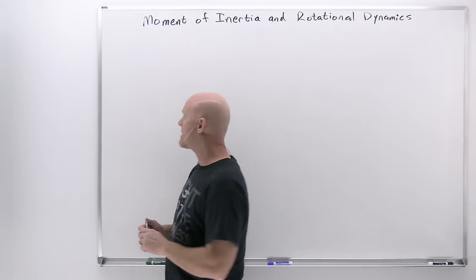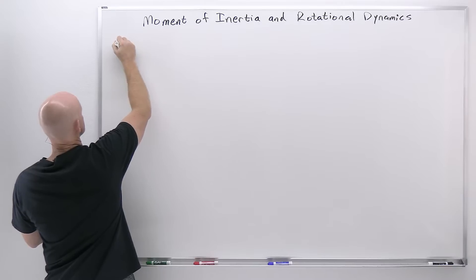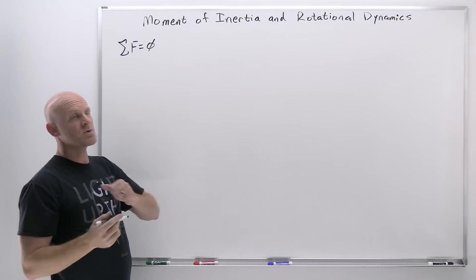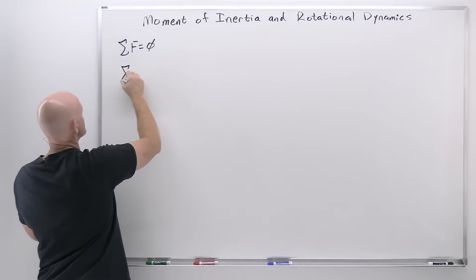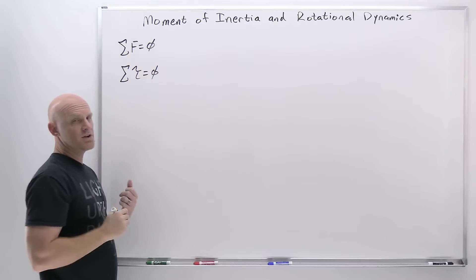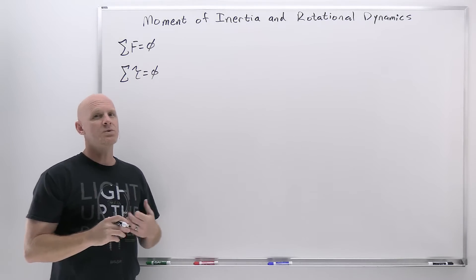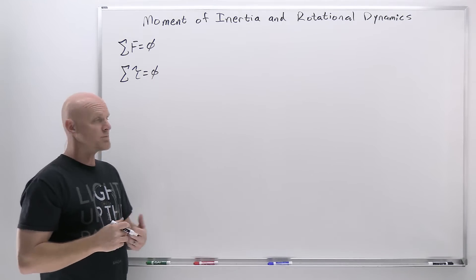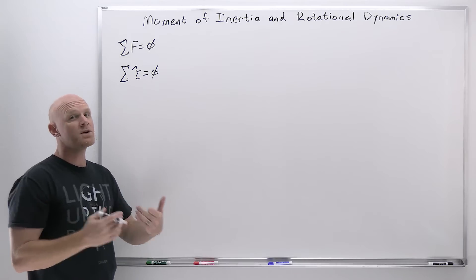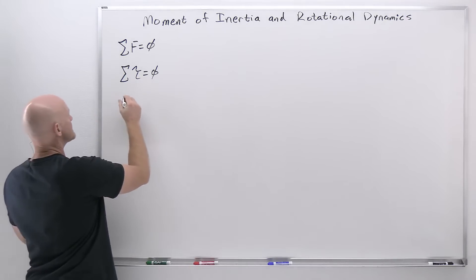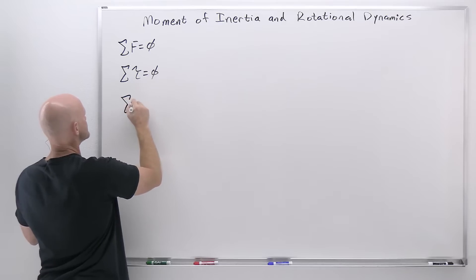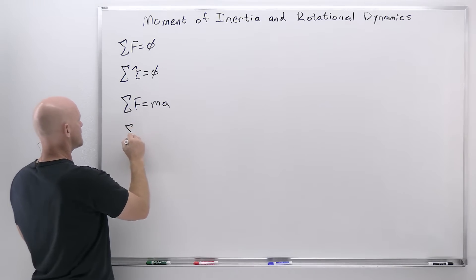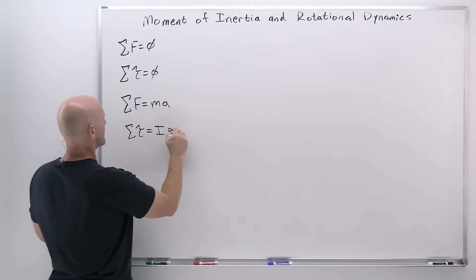Let's go back and rehash the last lesson. When objects are in equilibrium, the sum of the forces equals zero, and when an object is in rotational equilibrium, the sum of the torques equals zero. In this lesson we're dealing with objects that are not in rotational equilibrium — they're going to have a net torque on them. Just as we used Newton's second law (sum of forces = ma) for translational cases, now it's going to be the sum of the torques equals I times alpha.